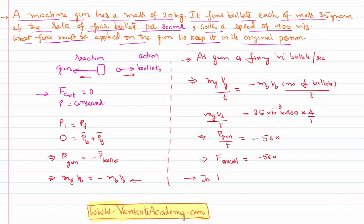So to hold the gun back to its original position, as the gun is being pushed back, we shall apply a force of 56 newtons in the forward direction, so that these two forces will balance and the gun will remain in its horizontal position.